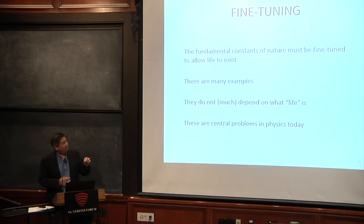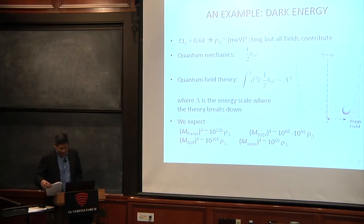These fundamental constants have to be fine-tuned to allow life to exist and there are many examples of this. Let me give you one example, this question of dark energy. Previously, a few slides back I told you that dark energy makes up 68% of the universe.